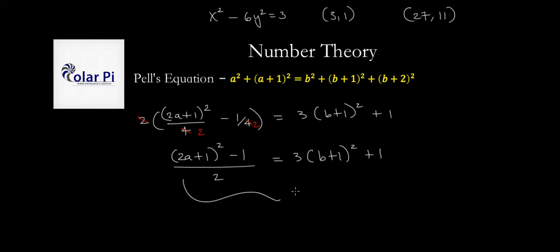And next, I'm going to multiply both sides of this equation by 2. And when I do that, I get (2a + 1)² - 1 on the left side, and on the right side, I'll have 6 times (b + 1)² plus 2. And it's pretty obvious what I'm going to do next. I'm going to move this to the left side and move this minus 1 to the right side. And when I do, I'll be able to write (2a + 1)² - 6(b + 1)² = 3.